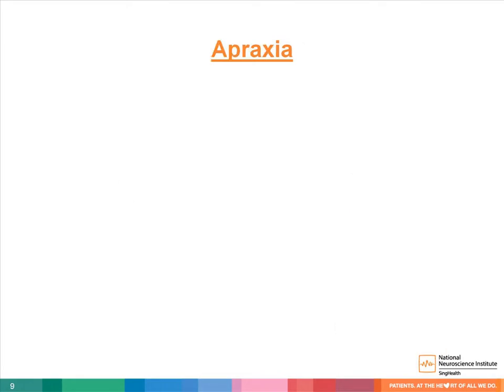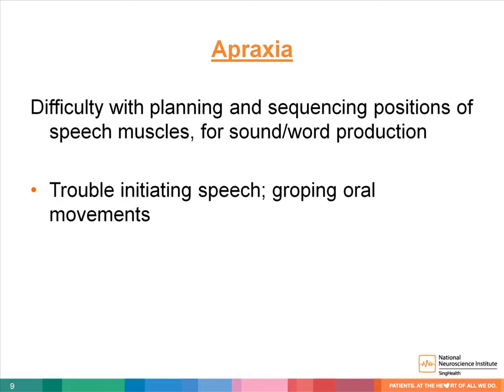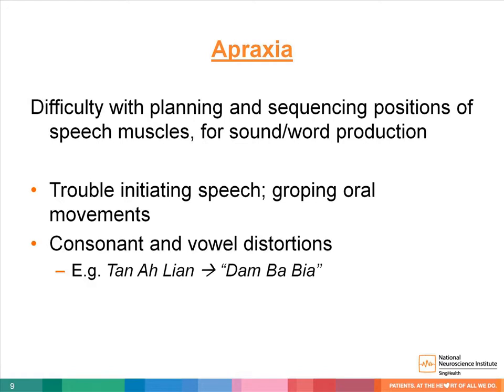Third, apraxia occurs when a person has difficulty with planning and sequencing sounds for word production. They may present with problems initiating speech, and speech errors may sound like distortions of the intended word — for example, saying "tantalian" as "dam ba bia." In severe cases, patients with apraxia may be unable to produce any sound.